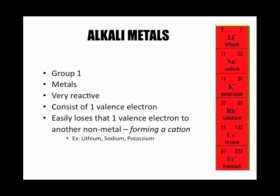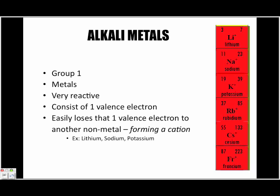Everything just below hydrogen in that group is considered an alkali metal. They're metals, they're very reactive, and they consist of one valence electron, which is easily lost. They will lose that one valence electron to a non-metal on the opposite side of the periodic table. When they lose that electron, they form what we call cations.